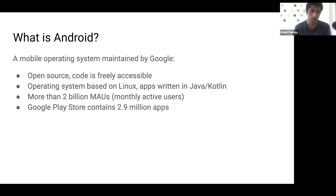The operating system for Android is based on Linux. So if you have a background in Unix or Linux development, a lot of that knowledge carries over when dealing with the Android OS. What we're here for is app development on Android — we're not really concerned about the internals, but about writing apps. You have two choices for writing apps in Android: either Java or Kotlin.